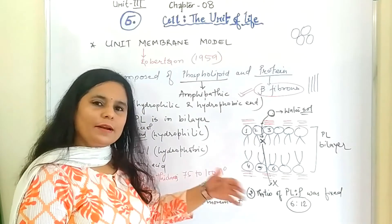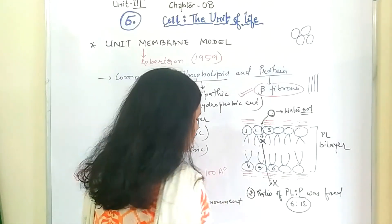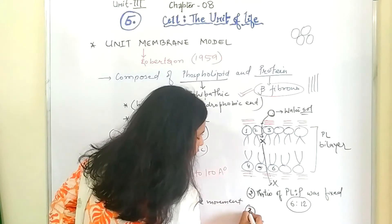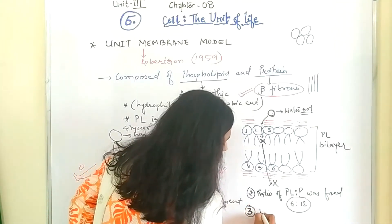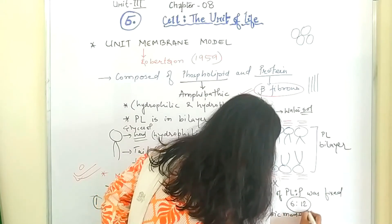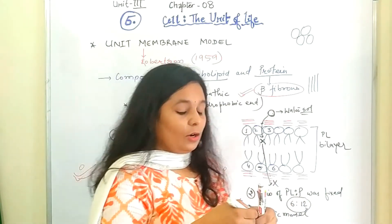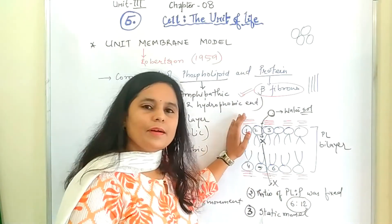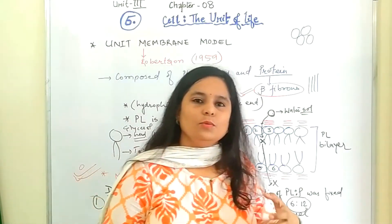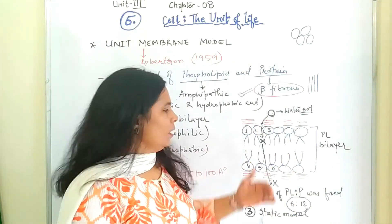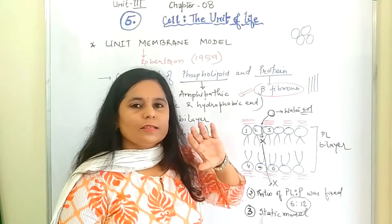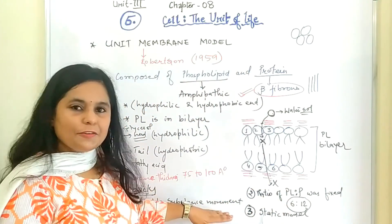These are the two drawbacks which you have already read in sandwich model. Same drawbacks were there. And the number last was that it was a static model. Again, static model is not giving any clue for the membrane transport. And the membrane transport is a very important characteristic of plasma membrane. So because of these, we are not getting the clue that the membrane is dynamic. Membrane is not dynamic. So it will not be transportation. And if there is no transportation, especially water-soluble molecules, the survival of the cell will be difficult. So these were the three drawbacks of Robertson.